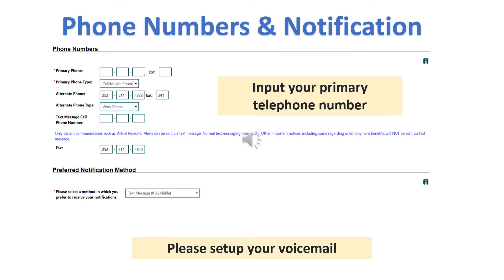Input your primary telephone number and annotate if you would like to receive text. Under preferred notification method, this is how you will receive messages through NCWorks — through email, telephone number, or through the system.